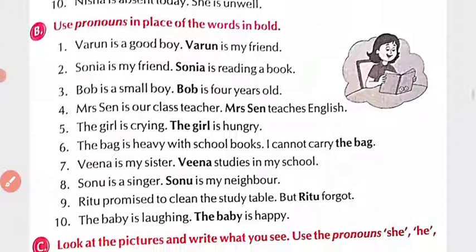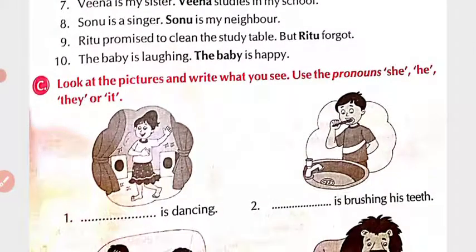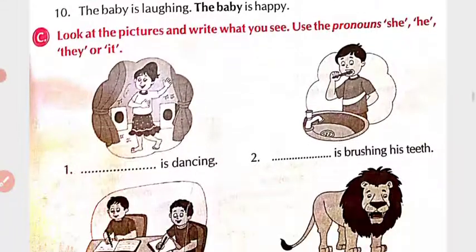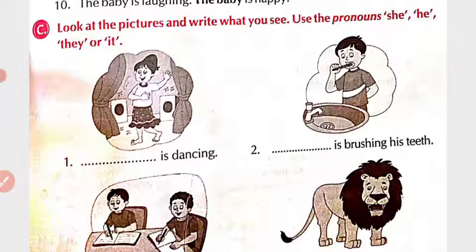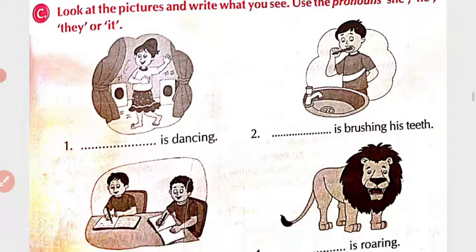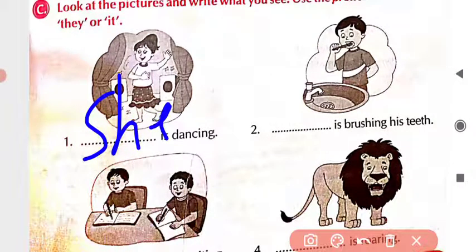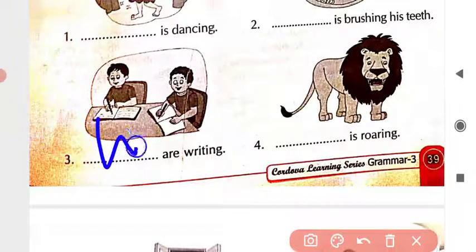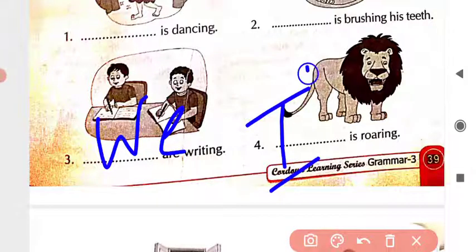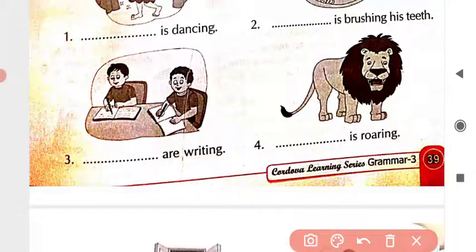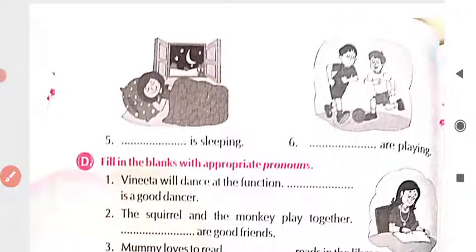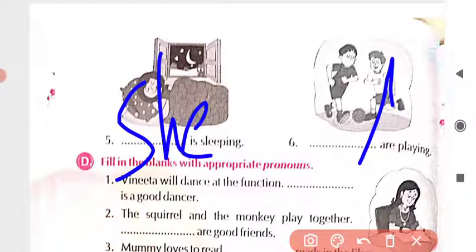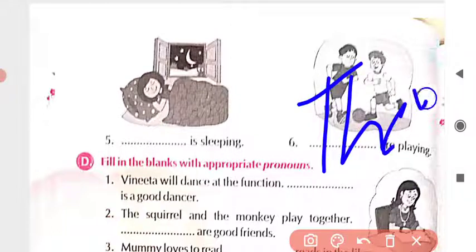Do this exercise as homework in your copy and send it back to the WhatsApp group. Exercise C: look at the pictures and write what you see using the pronouns she, he, they, or it. For example, if there is a girl who is dancing — 'She is dancing.' If there is a boy brushing his teeth — 'He is brushing his teeth.' If multiple people are writing — 'They are writing.' If a lion is roaring — 'It is roaring.' If a girl is sleeping — 'She is sleeping.' If they are playing — 'They are playing.'